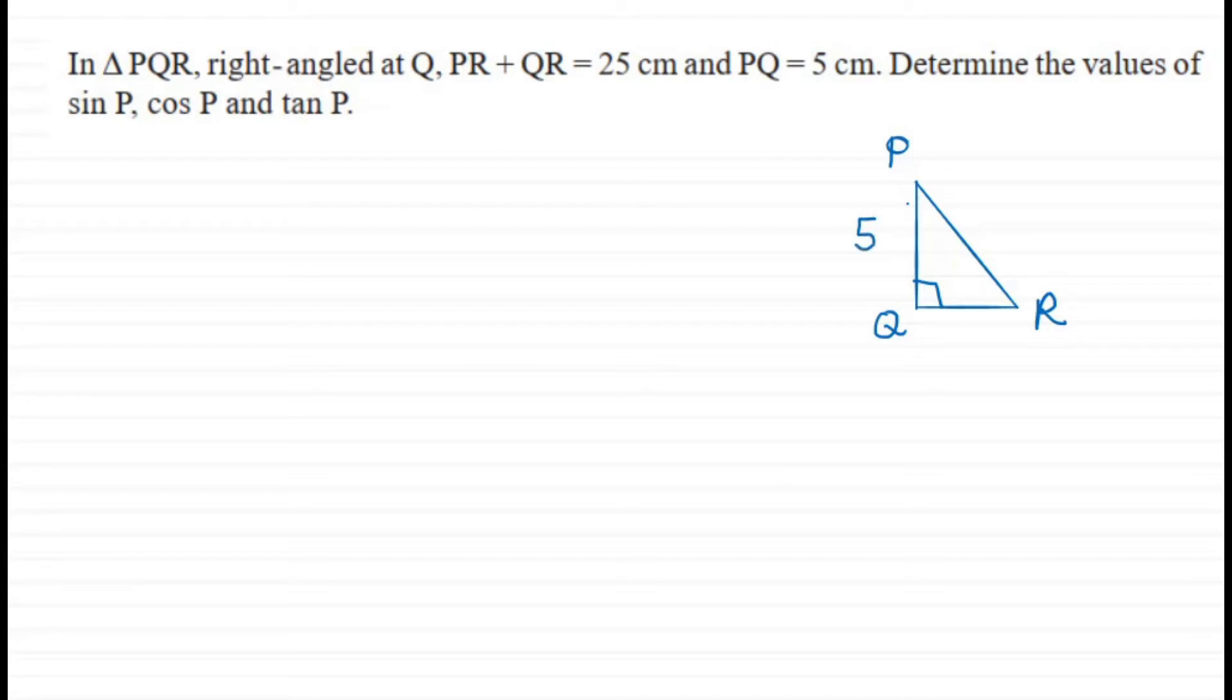It is given that PQ is 5, so this side is 5. The other given information is PR plus QR equals 25.